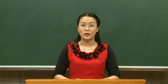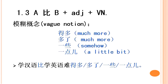For instance: 学汉语比学英语难得多 (Learning Chinese is much harder than learning English); 学汉语比学英语难多了; 学汉语比学英语难一些; 学汉语比学英语难一点. These four phrases express vague degrees of difference ranging from a large difference to a smaller one.